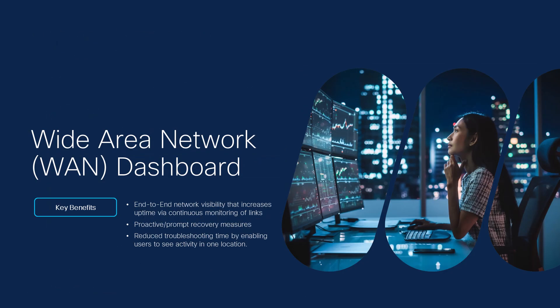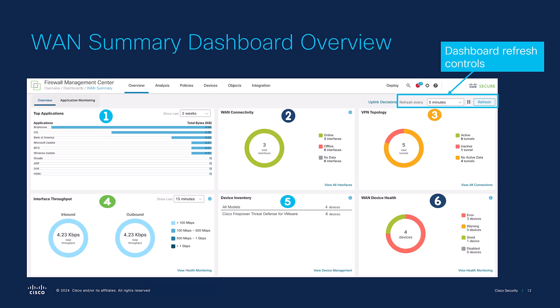Moving on, we now have the new Centralized Wide Area Network or WAN Summary Dashboard, which provides a high-level overview of WAN devices, interfaces, and application details. Starting from the top left at number one, it shows the top applications by throughput based on the selected time range. For WAN connectivity, the top center at number two shows the distribution of WAN interfaces by their status and has a link to the health monitoring page. VPN topology at number three in the top right shows the status of site-to-site VPN tunnels and has a link to the site-to-site VPN dashboard.